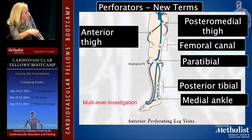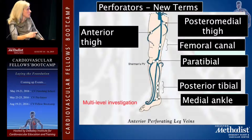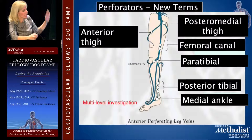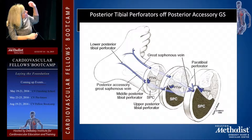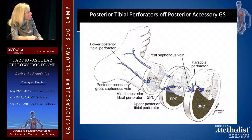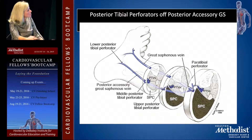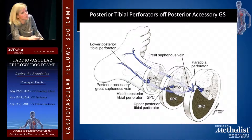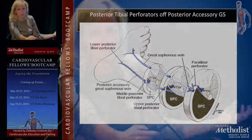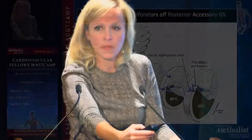Perforator veins can be located in the thigh or the calf. One important point: the posterior tibial perforators come off the posterior accessory GSV. So when you can't directly access your perforator veins, it's important to note that the posterior accessory great saphenous vein is usually where your incompetent perforators are coming off of.